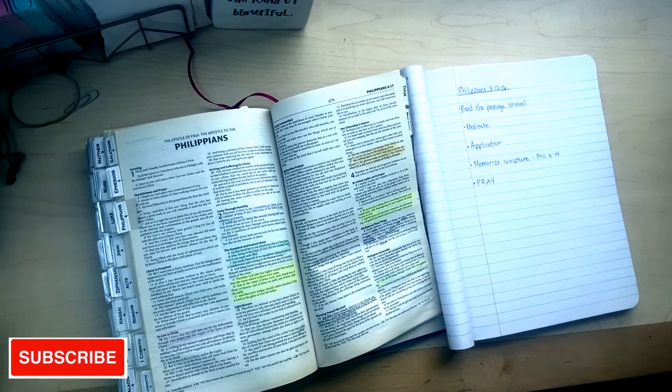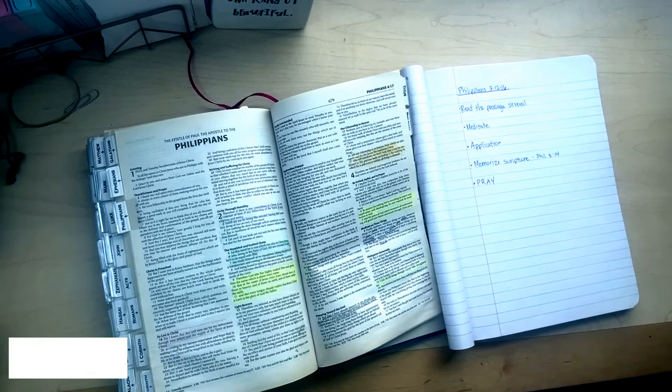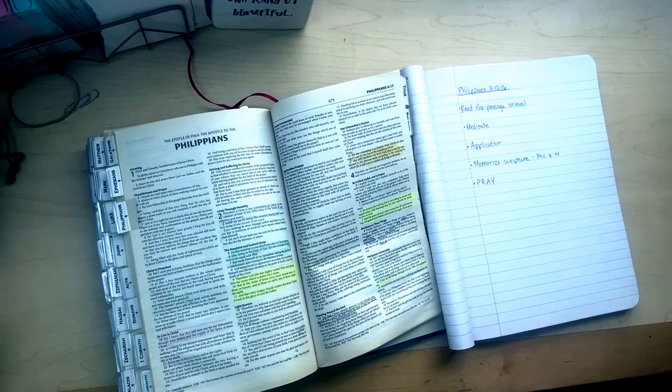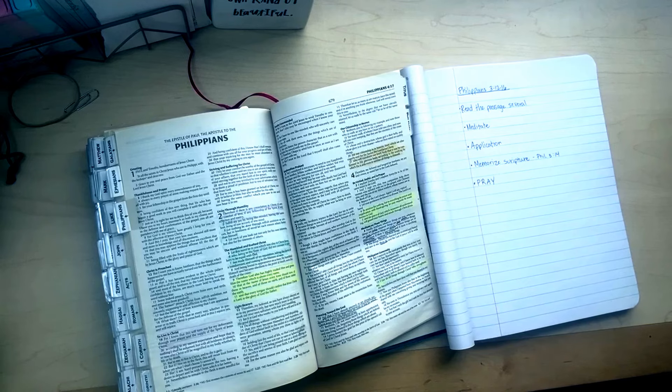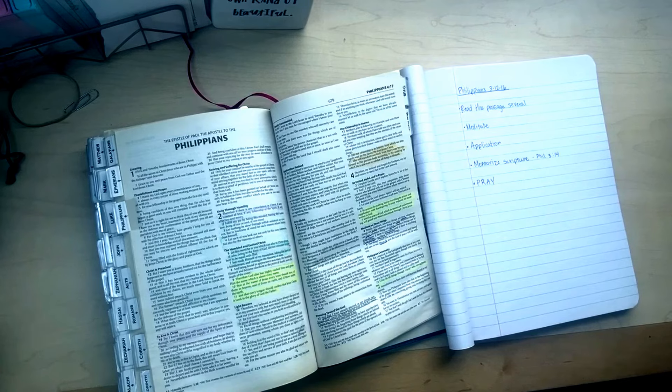And one last thing that I want to add is it is okay to read this in multiple translations, especially when you're doing the reading part. Maybe the one translation you have, it isn't necessarily making a whole lot of sense. So you may consider reading it in another translation or more than two translations, depending on how many translations you use when you study. Generally, when I'm doing my study, I always start in the New King James translation. And then most times, I would say 99% of the time, I use my Amplified translation after that. And then sometimes, depending on what I'm studying, I will also read through the NLT translation and the Message translation. So again, that just depends on what I'm studying, how long I have to study, all of that. So you may consider using another translation in your study time.